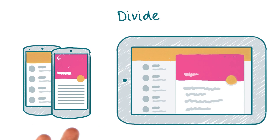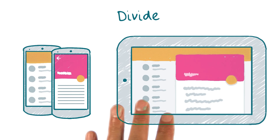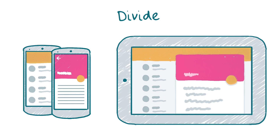We might also divide the available space to show additional content. For example, showing a details page on the same screen as a list, rather than on a completely new screen.